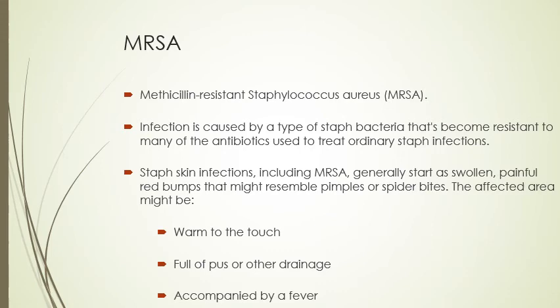MRSA — Methicillin-Resistant Staphylococcus aureus — is an infection caused by a type of staph bacteria that has become resistant to many antibiotics used to treat ordinary staph infections, making it like a super staph infection. Skin infections generally start as swollen, painful, red bumps that may resemble pimples or spider bites. They might become warm to the touch, full of pus or other drainage, and may be accompanied by a fever. It takes stronger antibiotics to cure this — MRSA is a very common infection you'll see in facilities.